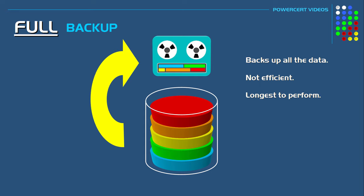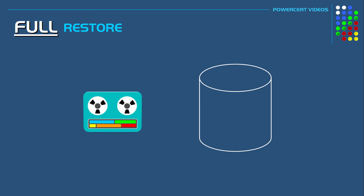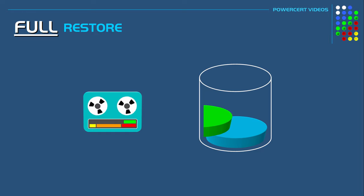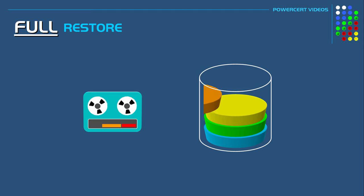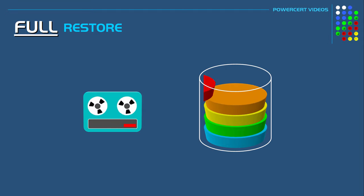But full backups do have an advantage, and that is during data restoration. Because if you ever needed to restore the data, it can be restored in one session. So in our example, the data is being backed up into one tape, and that single tape is all you would need for data restoration. So the data restoration is very simple.